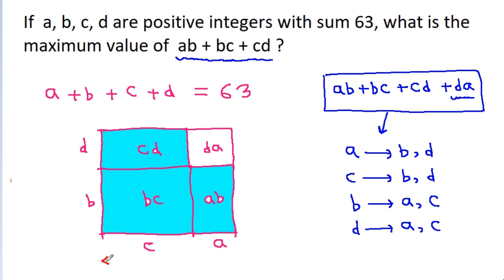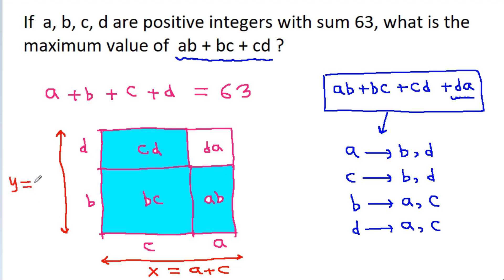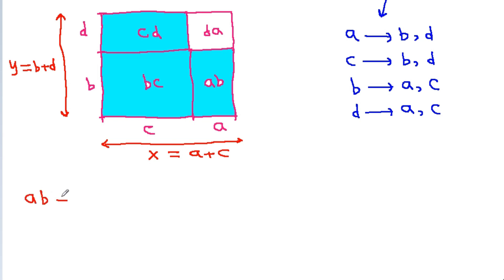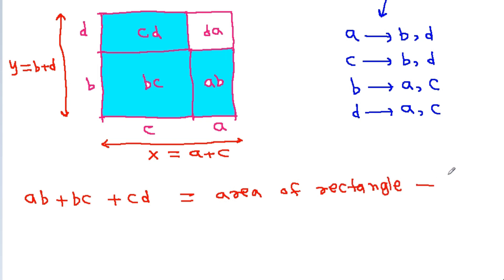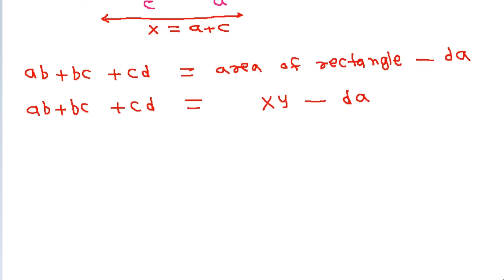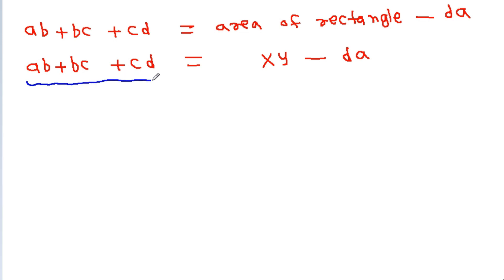Suppose we let x = a + c and y = b + d. Then ab + bc + cd equals the area of the rectangle minus da — that is, ab + bc + cd = xy − da. We need to find the maximum value of ab + bc + cd.